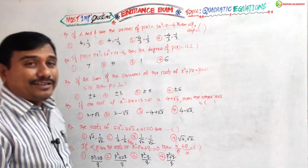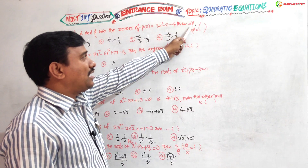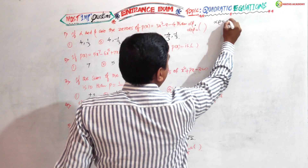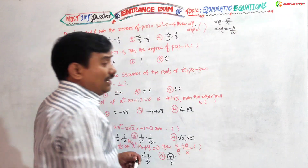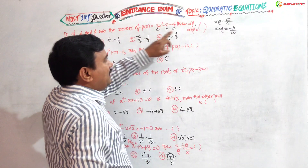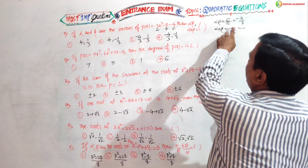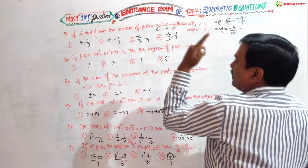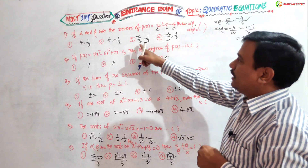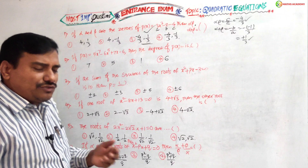Question one: if alpha and beta are the zeros of P of X equals 3x squared minus x minus 4, then find alpha times beta and alpha plus beta. Simple — alpha times beta equals c by a, which is minus 4 by 3. Alpha plus beta equals minus b by a, which is minus of minus 1 by 3, giving plus 1 by 3. So the answer is minus 4 by 3 and plus 1 by 3.